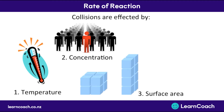The third factor is surface area. If you had a solid reactant and broke it up into a powder rather than having it as a solid ball, it's going to react faster. Because with more surface area, the reactants are going to be bumping into each other much faster and therefore there's a higher frequency of collision.